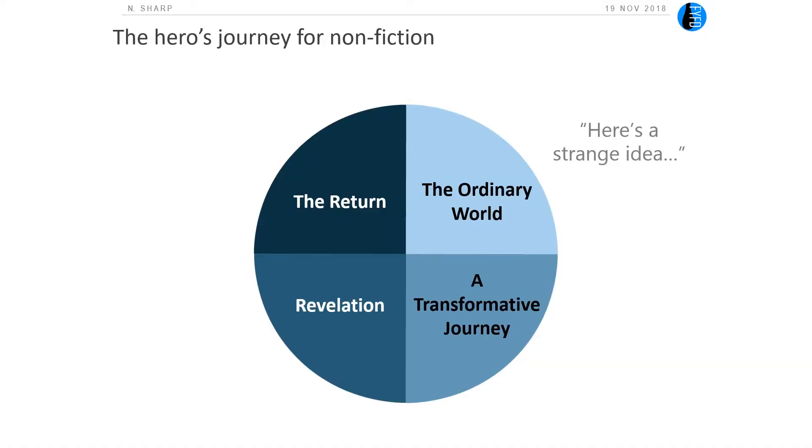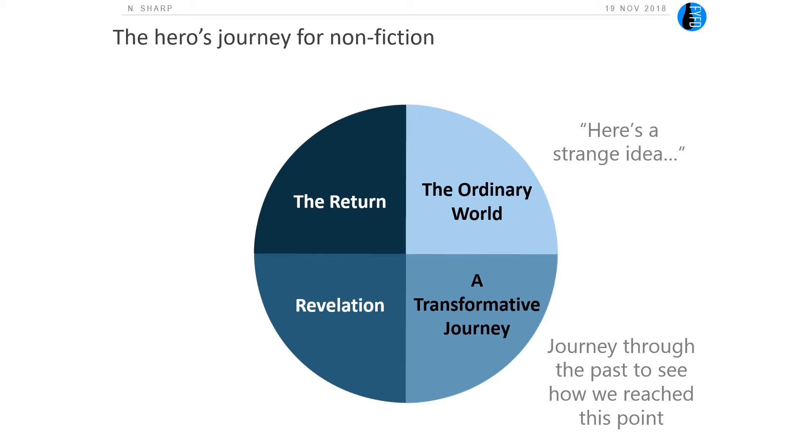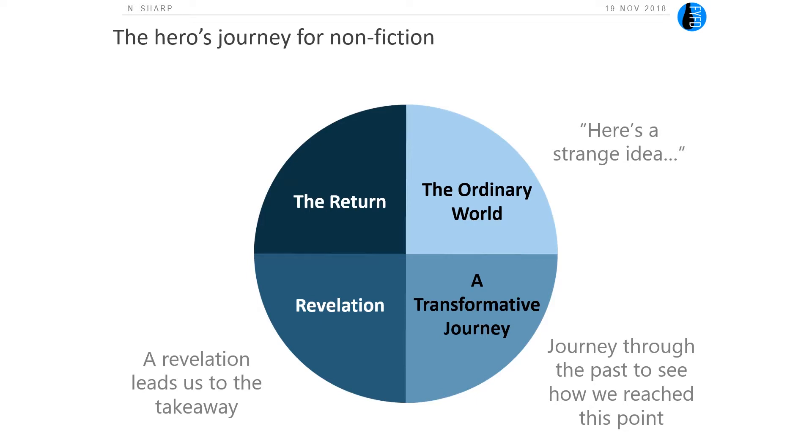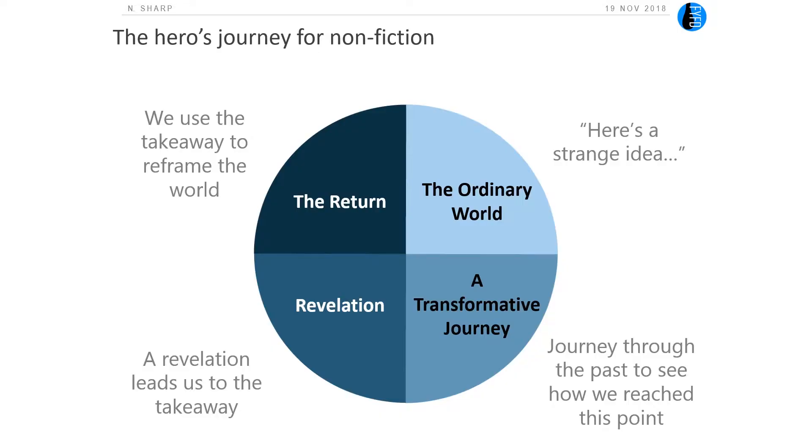Here's a crazy idea: what if we did this with nonfiction? It turns out we can. It usually starts out with something like, here's a strange idea that I'm going to introduce. For example, maybe I want to talk about why a golf ball can fly further than a ball of the same size and weight that's smooth. On a transformative journey, that's talking about the past and how we got to this point — so I might talk about D'Alembert's paradox and ideal flow and how we can't quite resolve what's going on unless we take into account viscosity and boundary layers. And so we have this revelation of: what if we pay attention to the flow very close to the surface and consider viscosity there? And that leads us to the important takeaway of what happens with boundary layer separation and how looking at this key idea completely reframes our understanding of that original problem.